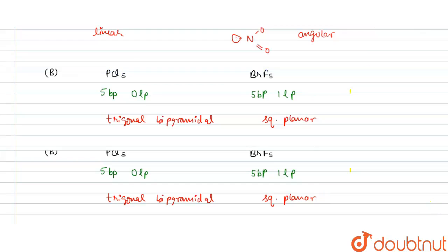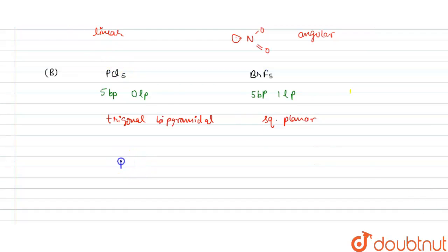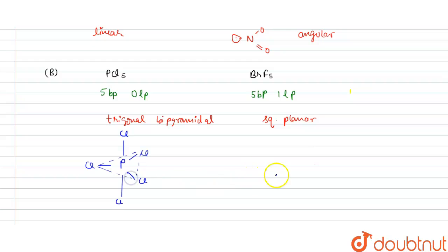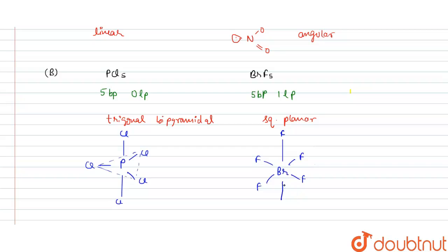The diagram of PCl5 shows phosphorus at the center with three Cl atoms in the equatorial plane, one Cl on top and one on the bottom — trigonal bipyramidal. For BrF5, bromine sits in a square plane with four F atoms, one F on top and one lone pair on the bottom, making it square pyramidal. These shapes are not the same, so option B is also wrong.